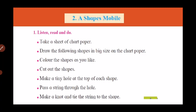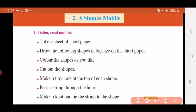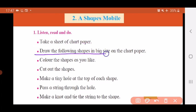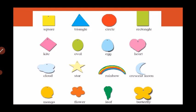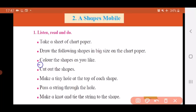Are you ready children? Let's start — listen, read and then do it. First, take a sheet of chart paper. You can take any chart paper of any color. You can also use different colors for your shapes, so use colorful paper to make your mobile more attractive. Draw the following shapes in big size on the chart paper. The shapes are shown to you on the next page, which we will see.